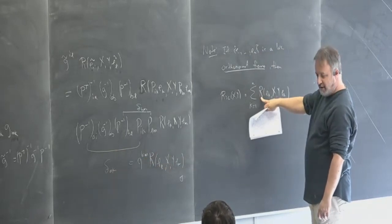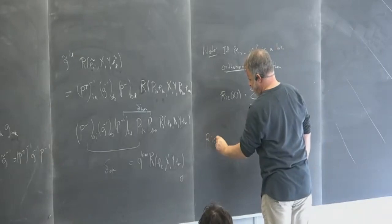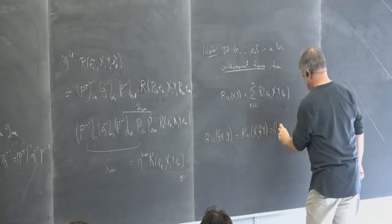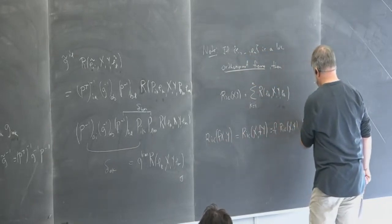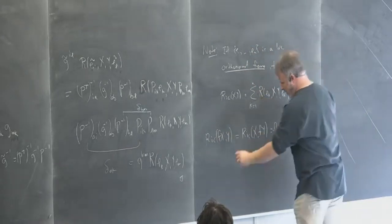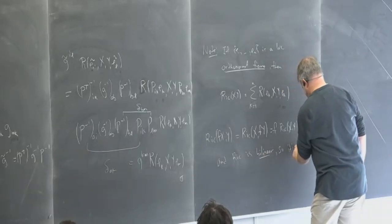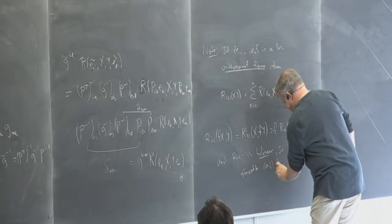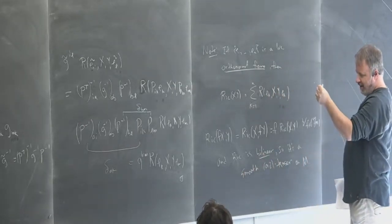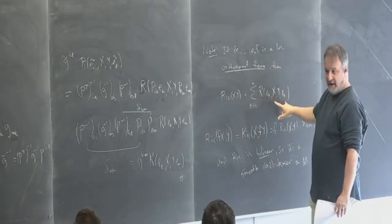Because the Riemann curvature tensor is a tensor, if we multiply X or Y by a function f, it comes right out. So Ric(fX, Y) = Ric(X, fY) = f·Ric(X, Y) for all f in C^∞(M). Clearly it's bilinear in X and Y as well, because R is bilinear. So Ricci is a smooth (0,2) tensor — something that takes two vector fields and gives a function, and at every point it's a bilinear form on the tangent space.